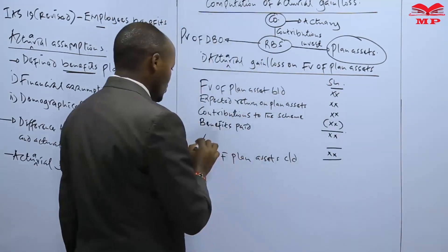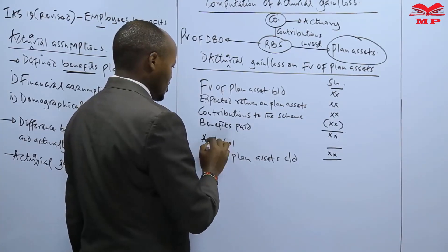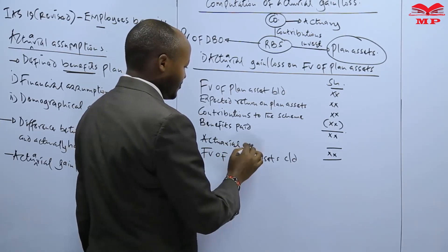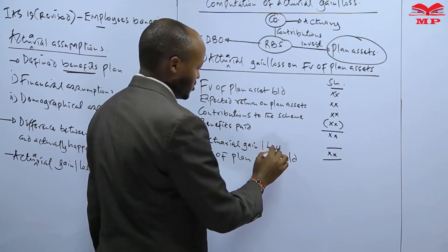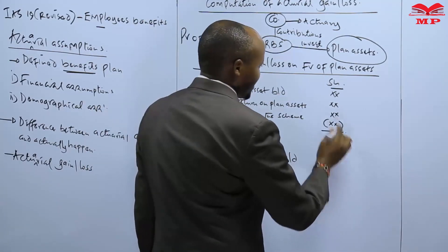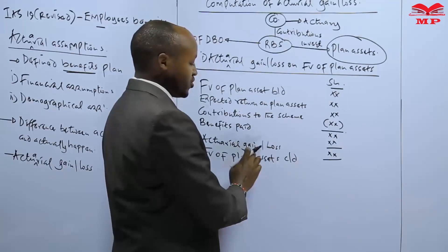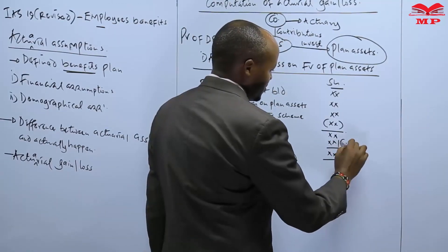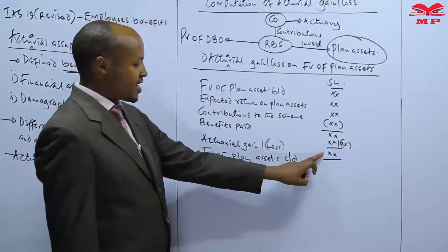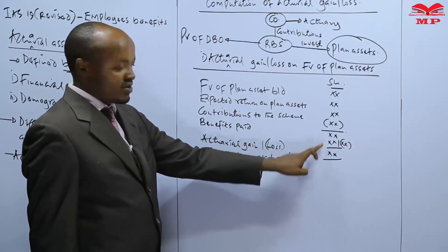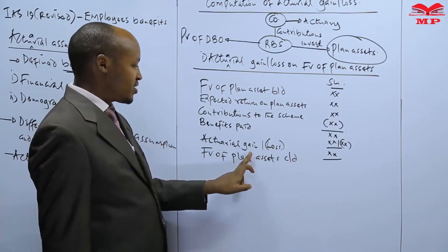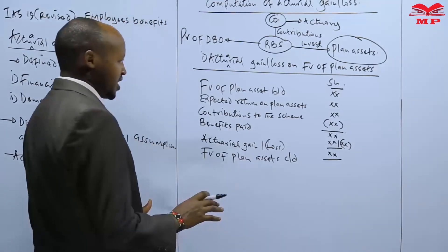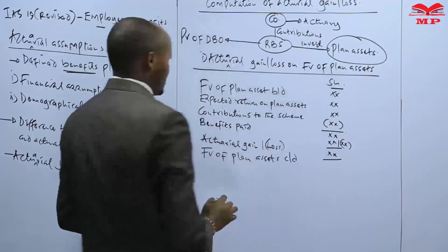The difference between the two values will be an actuarial gain or loss. Because we are dealing with an asset, if there is an increase in value, that is an actuarial gain; if there is a decrease in value, that is an actuarial loss. So if as per the valuation done at year end there is an increase in the value of the plan asset, that would be an actuarial gain, and if there is a decrease, that is an actuarial loss. That is how we compute the actuarial gain or loss as far as plan assets are concerned.